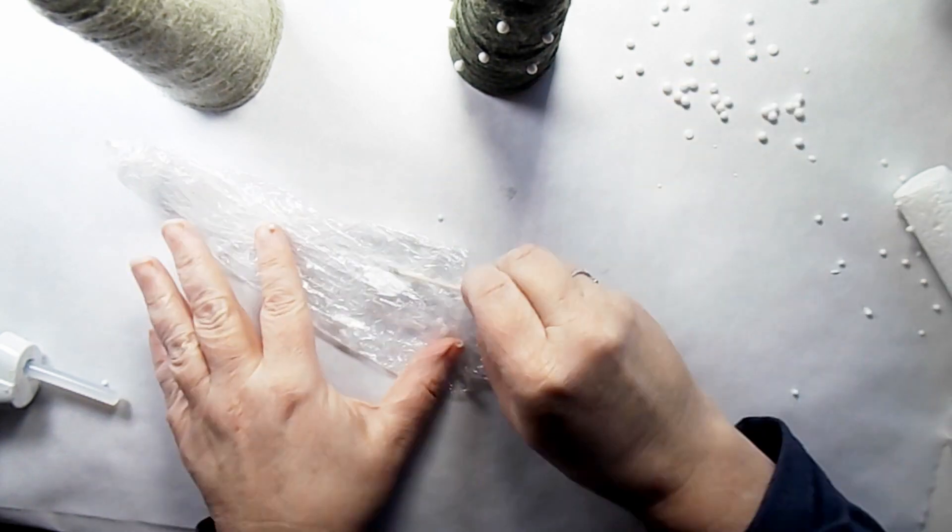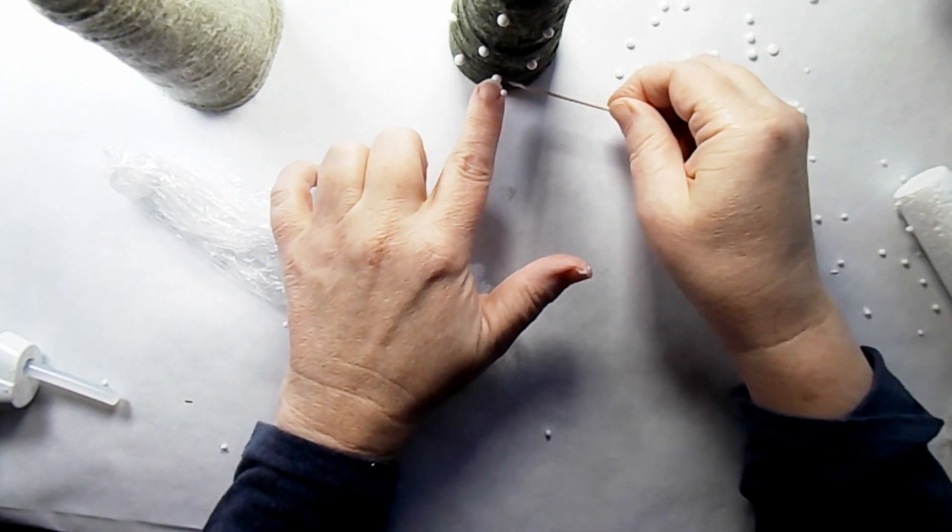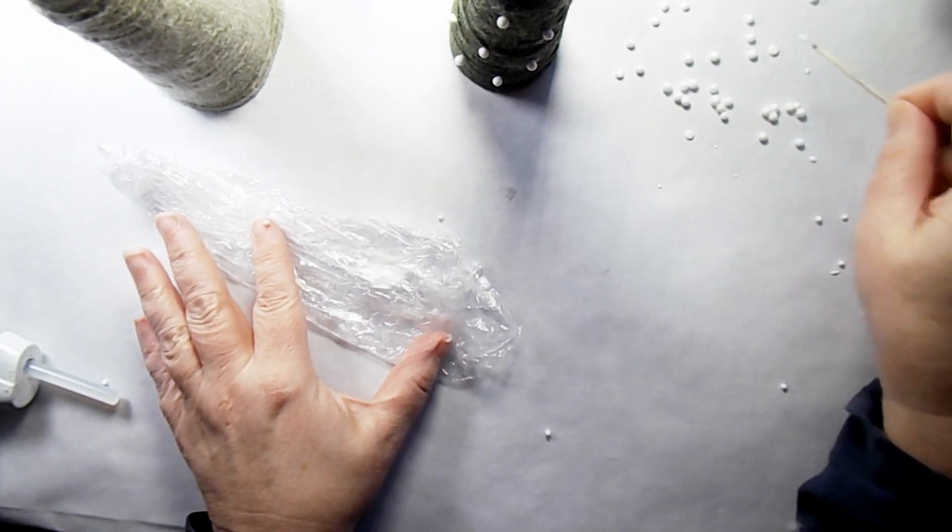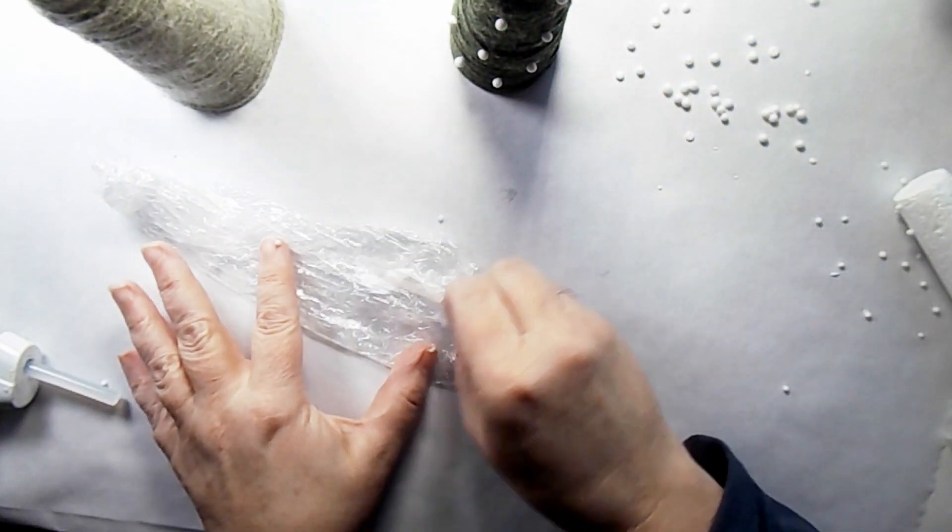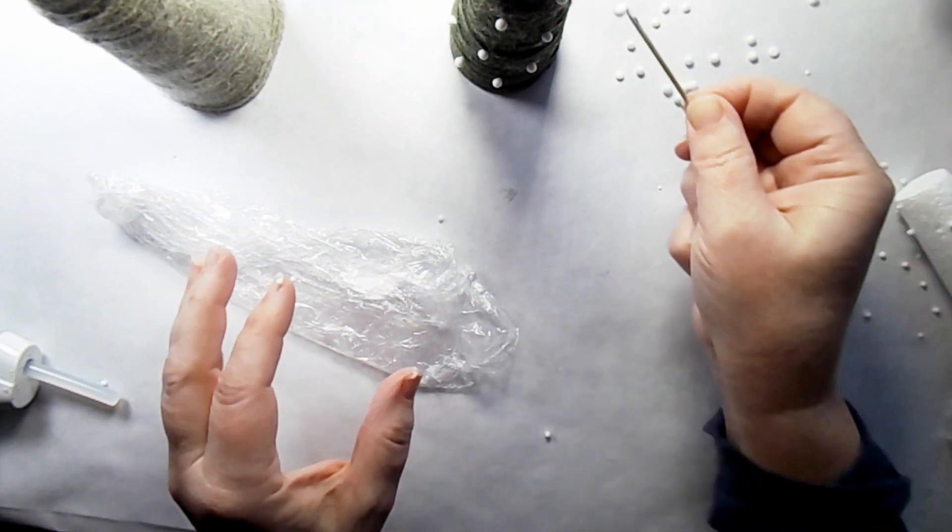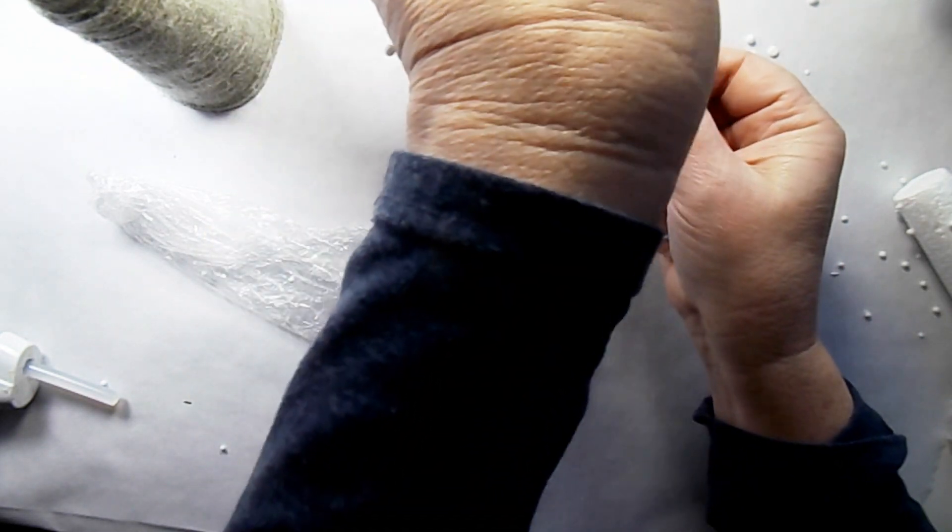I found it easier if I put it in the Mod Podge with the toothpick, touch the little ornament, wipe it on there. So simple. Couldn't be too much easier.